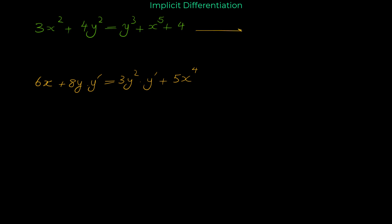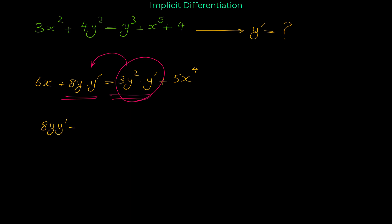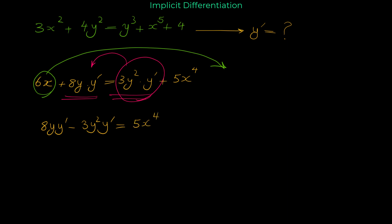Because we want to find y prime, we move all the terms involving y prime to one side and the terms without y prime to the other side. The terms with y prime are 8y·y′ and 3y²·y′, so we move them to the left: 8y·y′ minus 3y²·y′. We move the remaining terms to the other side, so we have 5x⁴ minus 6x on the right.